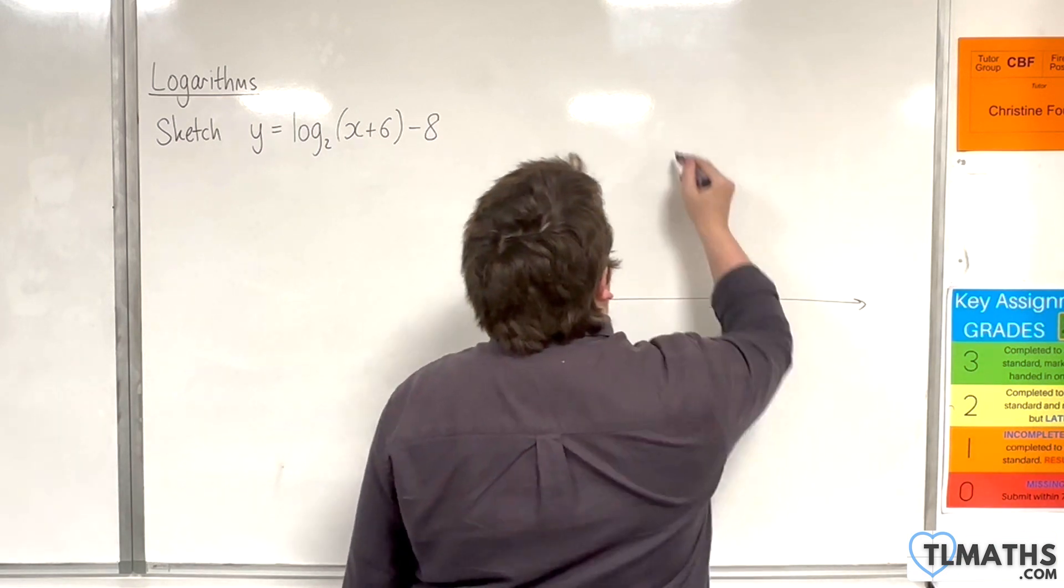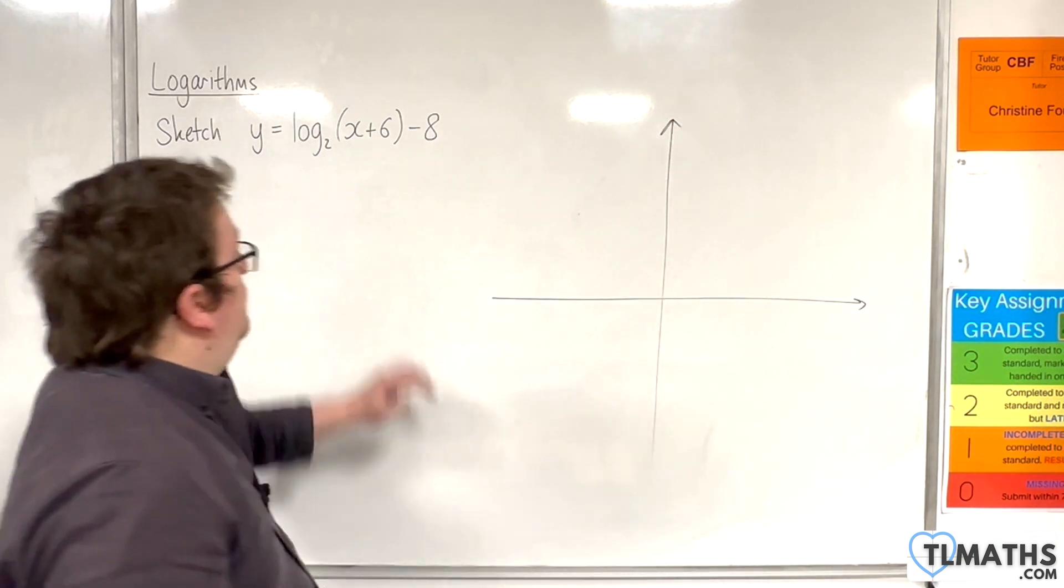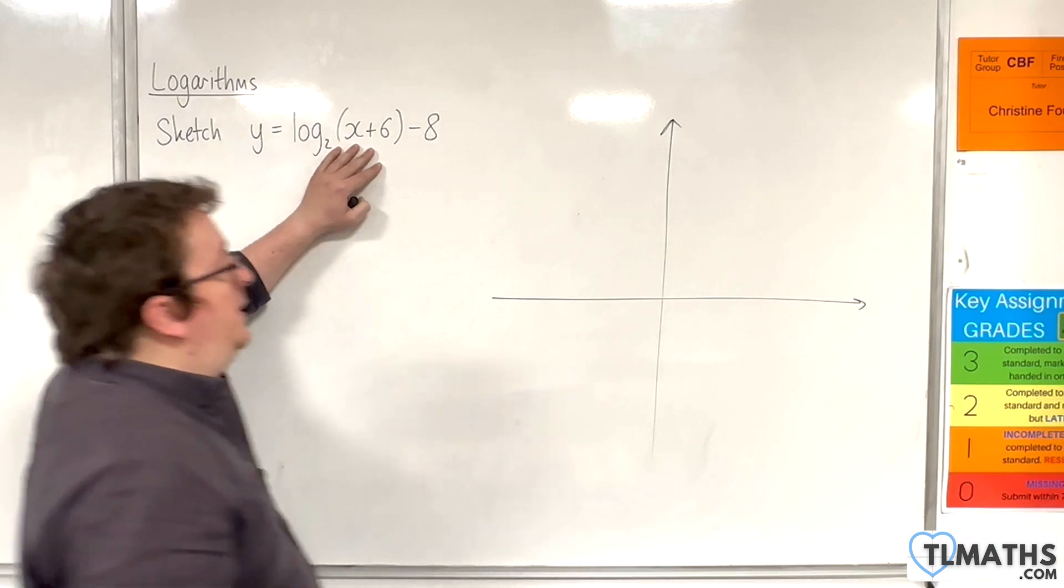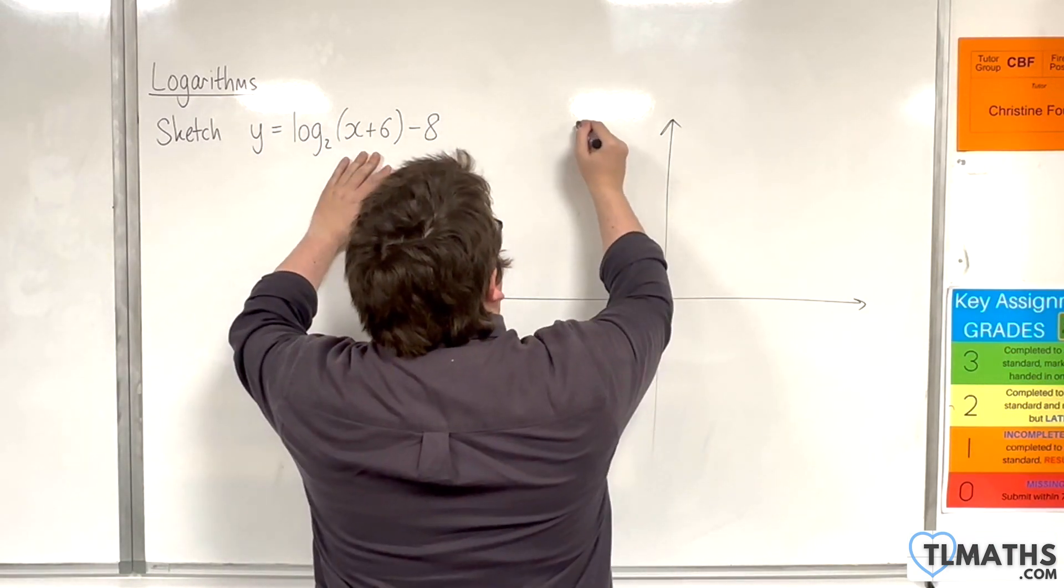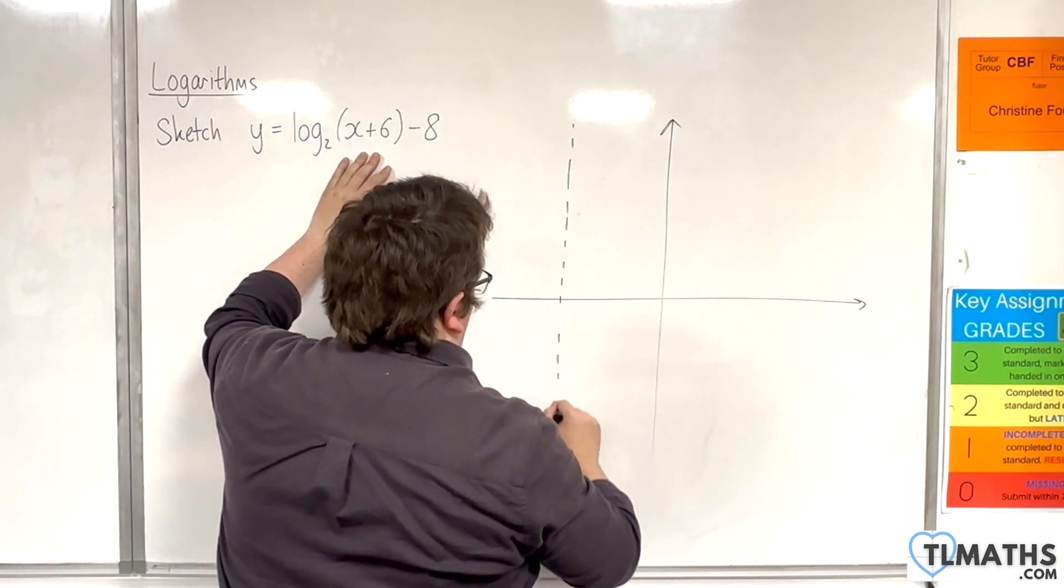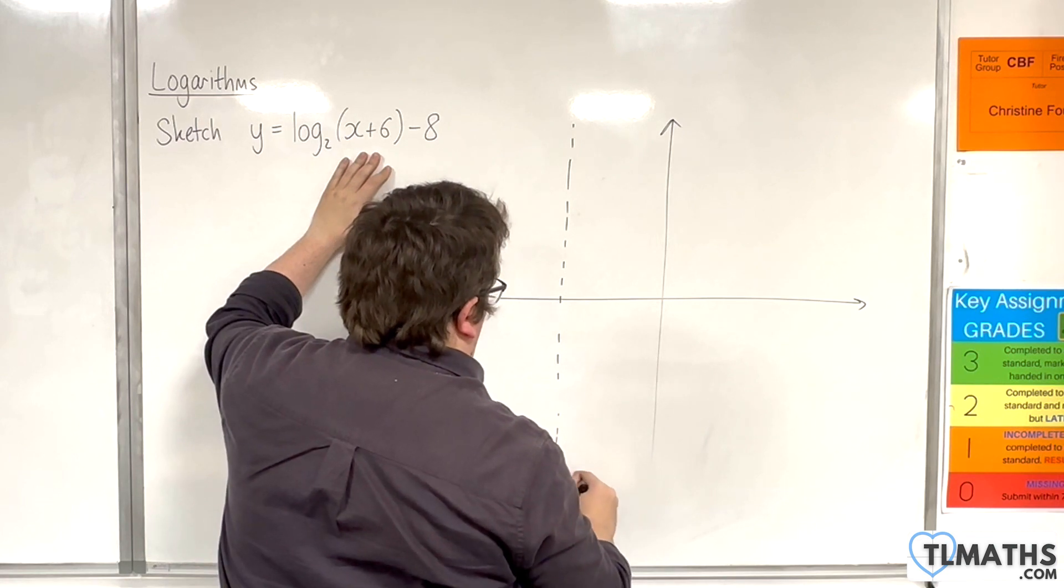First of all, let's identify the vertical asymptote, which is when x is minus 6, that's when that bracket is 0. So x equals minus 6.